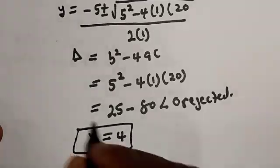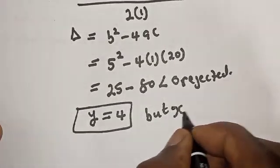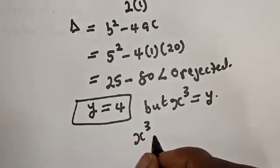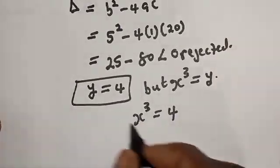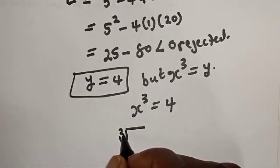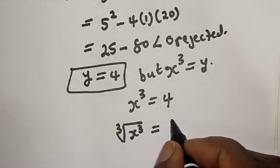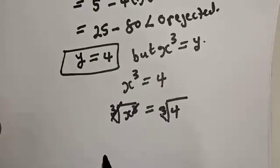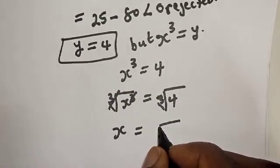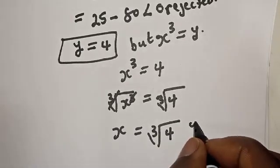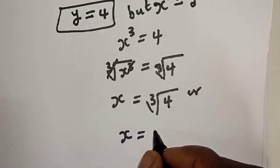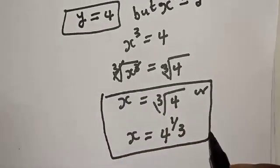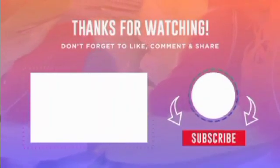The only solution is y equals 4. Since s³ equals y, then s³ equals 4. Taking the cube root of both sides, s equals the cube root of 4, or s equals 4 raised to power 1 over 3. This is the final answer. If you enjoyed the class, please don't forget to like, share, comment, and subscribe. Thank you.